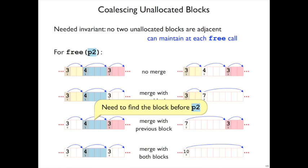There's a catch here based on our current data structures, which is that to check whether the block before this blue block is available, whether it's unallocated, we need to go backwards. But our linked list only goes forward right now.